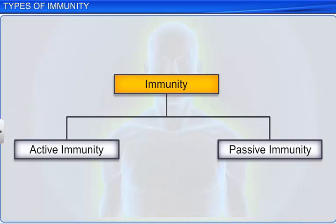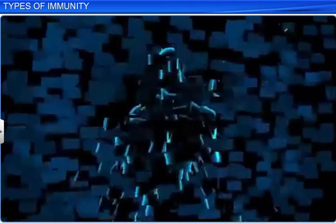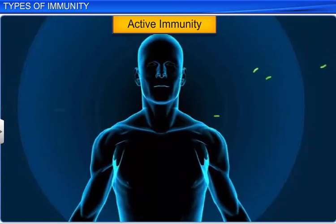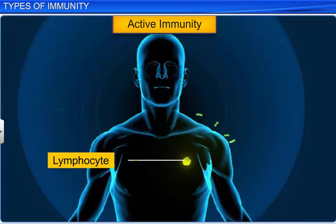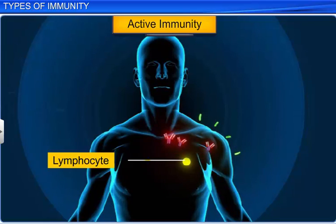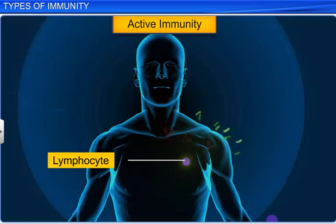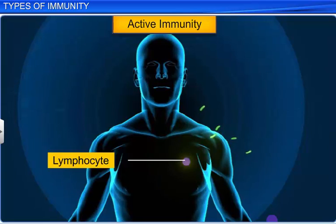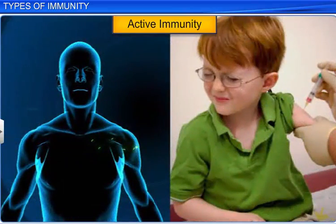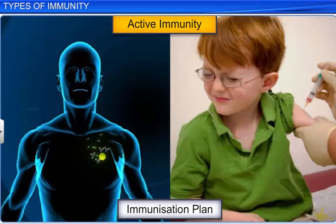Based on whether the antibodies are produced inside or outside the body, immunity can be distinguished as active immunity or passive immunity. When the body is exposed to antigens, such as living or dead microbes or other proteins, it produces antibodies in response. This type of immunity is called active immunity, which is slow and takes time to reach its full effective response. When microbes gain access to the body during a natural infection, active immunity is induced. Consequently, the underlying principle of any immunization plan is active immunity, where it is induced by deliberately injecting microbes into the body.